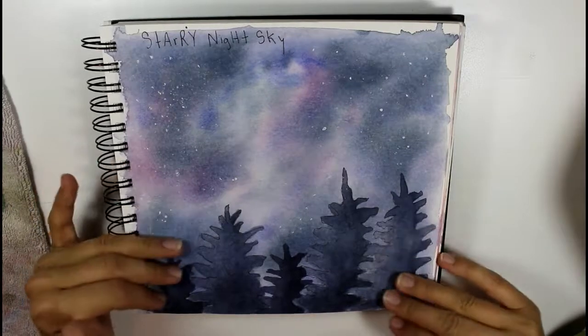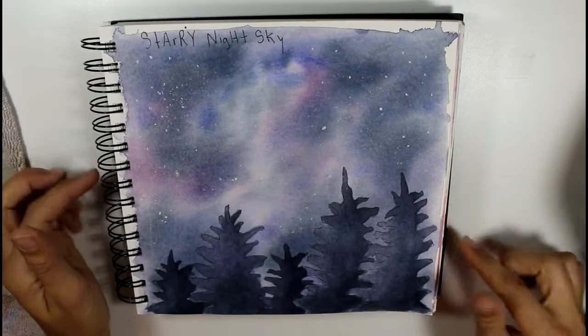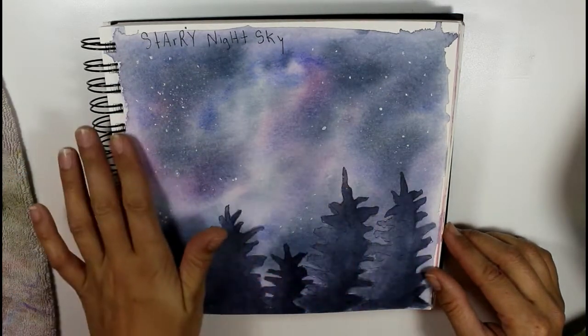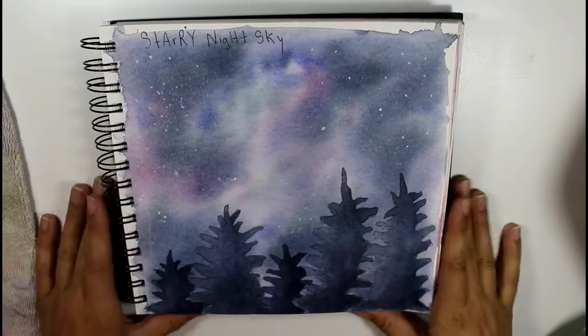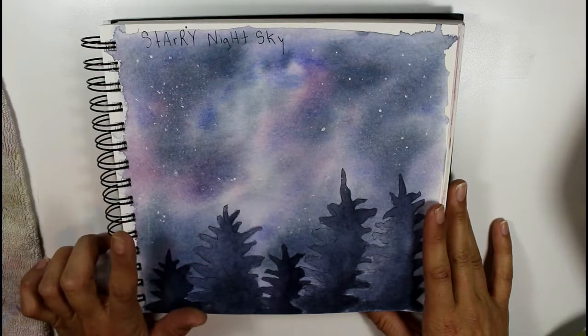Here's an example of a starry night sky that I did using the same technique I used for that easy circular galaxy. Instead I did the whole page, I added some stars and some silhouetted trees. Once again, you can get this full length class and project plus two other skyscapes - a blue sky and a sunset - in my Skillshare class which is linked down below.